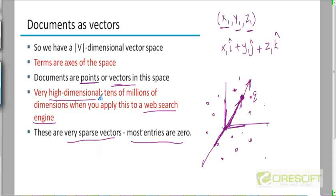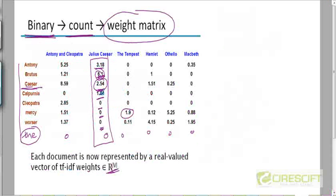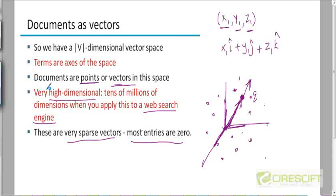Of course, here V will be very high — there will be tens of millions of dimensions. And these are going to be very sparse vectors. That is, most of these TF-IDF weights are going to be zero, because a document can have only on average a few thousand terms, whereas the vocabulary size is tens of millions. So most of those terms will not appear in a single document, and most coordinates will be zero.